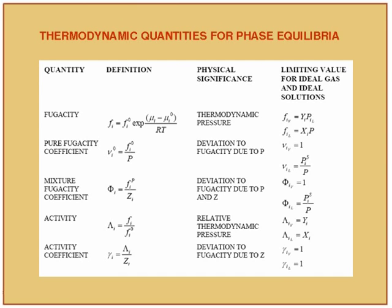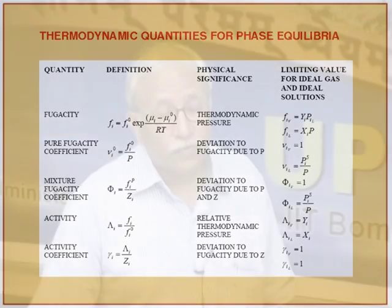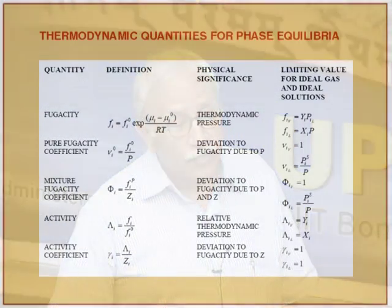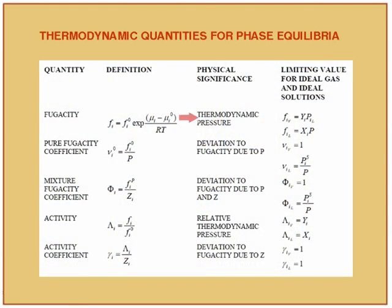We have the quantities, their basic definitions, their physical significances, and the limiting values for ideal gas and ideal solution. Ideal solutions are defined as those following Raoult's law. Fugacity — which I already mentioned — is termed as thermodynamic pressure. In a multi-component system, you can see that the vapor or liquid fugacity of the ith component is a sort of partial pressure, because we are multiplying by the mole fraction.